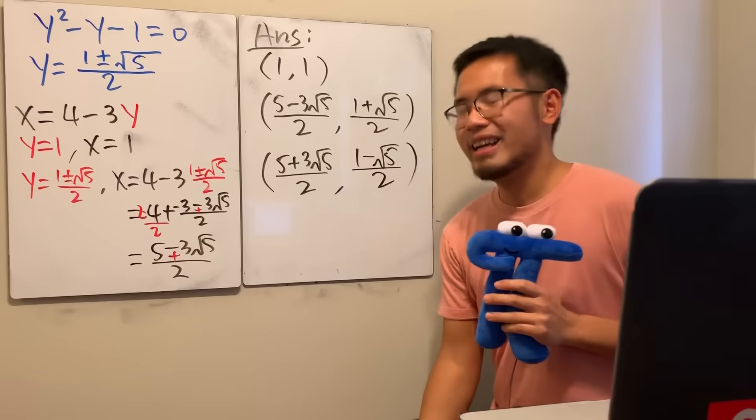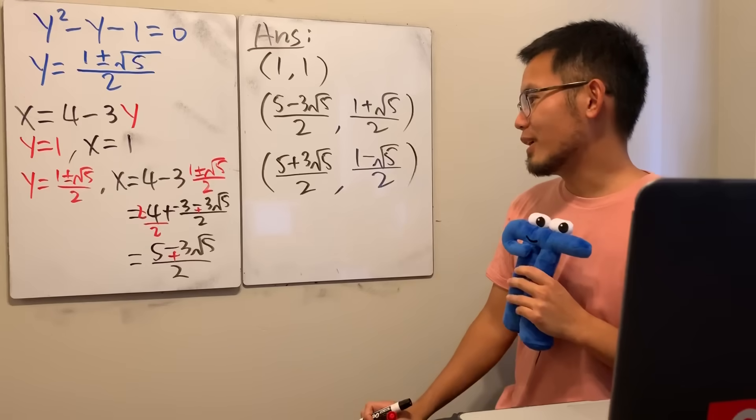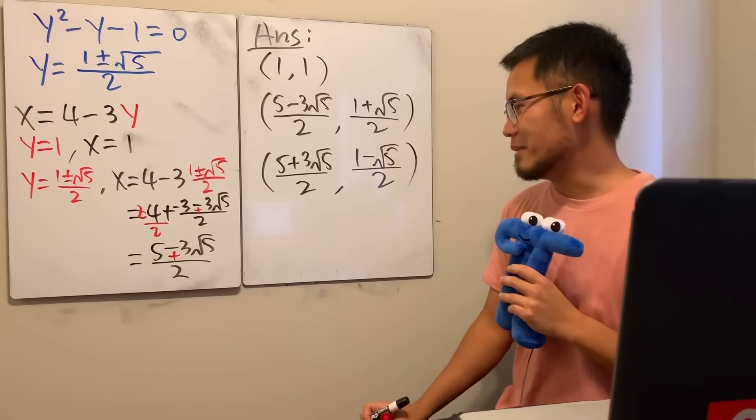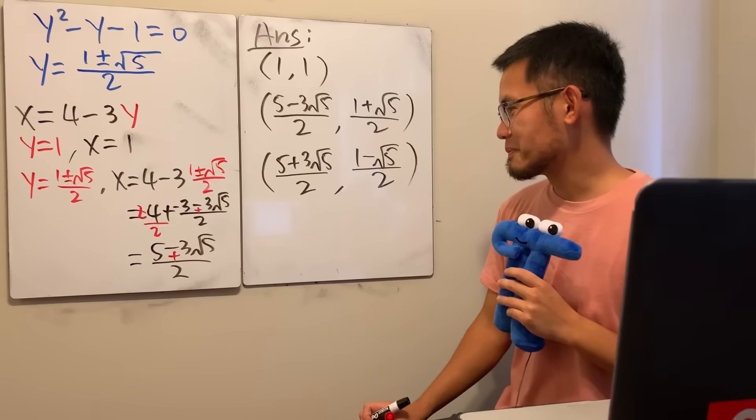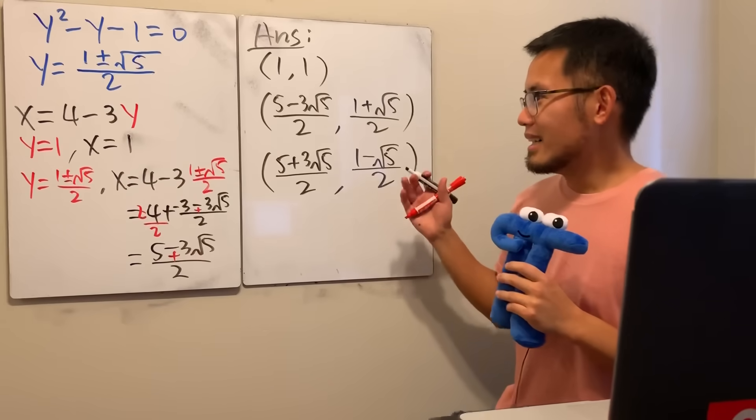So the three real solutions are: (1, 1); ((5 − 3√5)/2, (1 + √5)/2); and ((5 + 3√5)/2, (1 − √5)/2). Those are all the answers — hope I didn't make any mistakes. That's it!